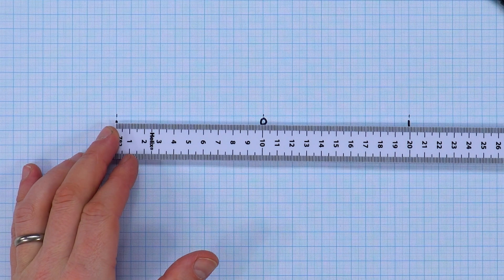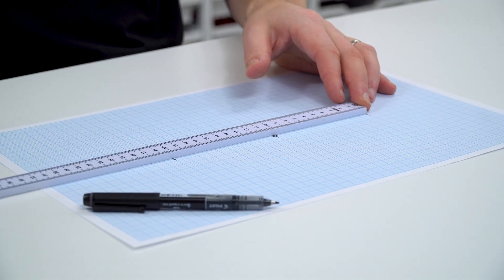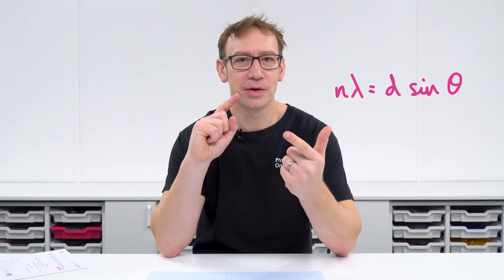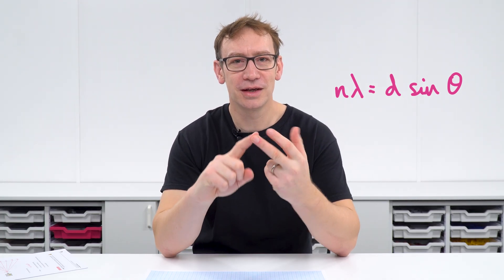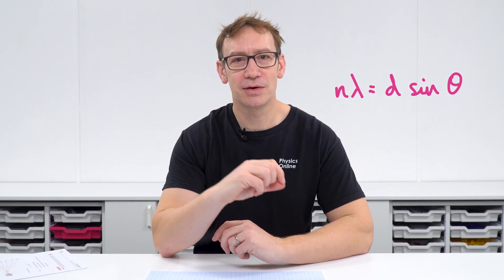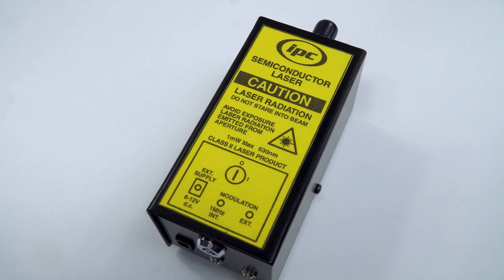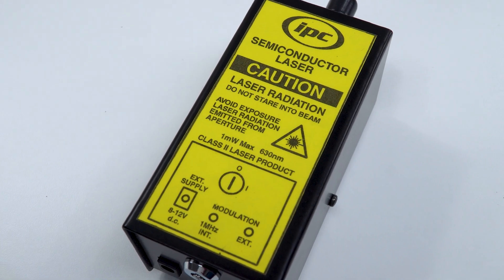It's always best to calculate the distance between first and first order, second and second, and third and third, measuring with a metre ruler to the nearest millimetre. Once we have values for theta, the order of the bright spot, and the diffraction grating spacing, we can use all of that to calculate the wavelength of light and check whether it agrees with what's published on the laser.